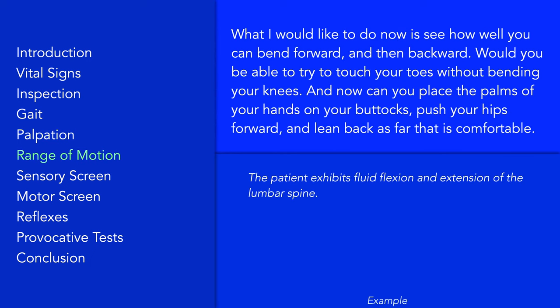If possible, assess active flexion and extension of the back. While assessing range of motion, position yourself close enough to the patient to provide support if necessary. During back extension, you may offer to place your hand on the patient's lower back to help keep them steady. Pay particular attention to whether pain is worse with flexion and improves with extension, and vice versa. Make note of any restrictions in movement, as well as the fluidity with which the patient manages these movements. If you suspect an inflammatory spinal disorder, it may be prudent to perform a Schober test and to assess for chest expansion.